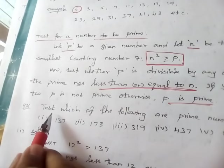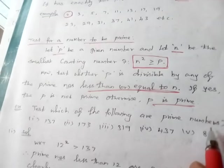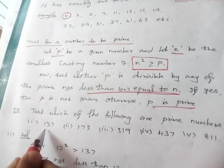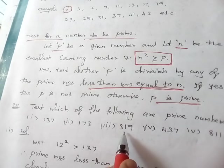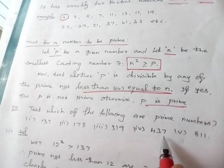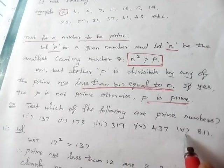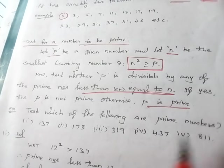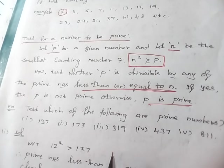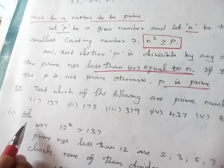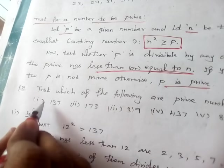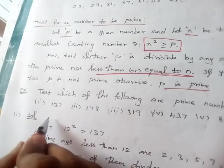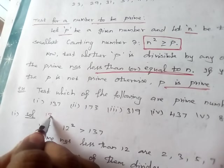Let us see one small example: test which of the following are prime numbers. The problems are: 137, 173, 319, 437, and 811. Now we are going to check which ones are prime. First, consider problem number 1: 137.